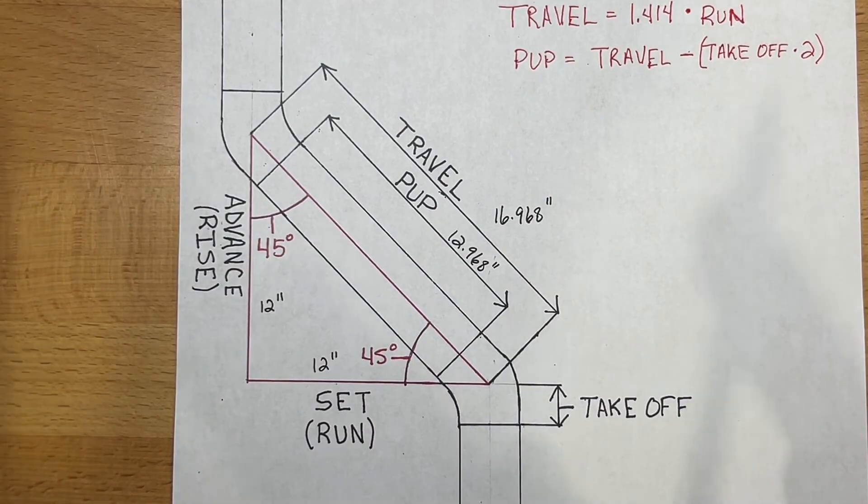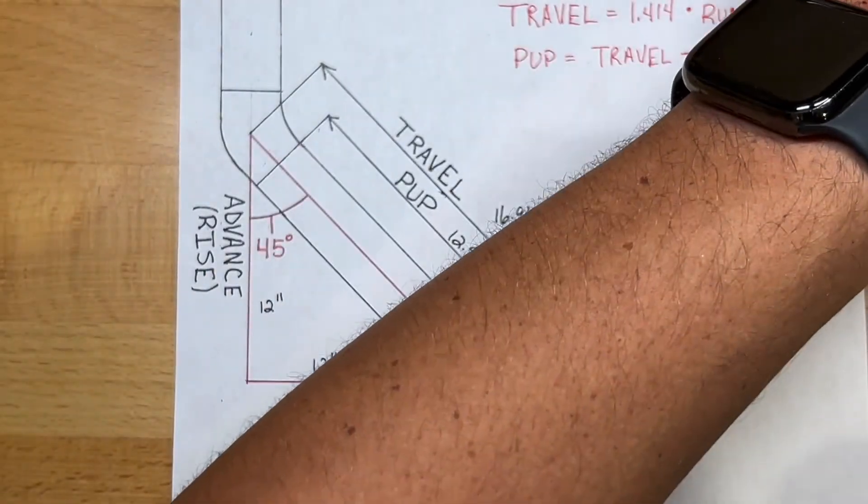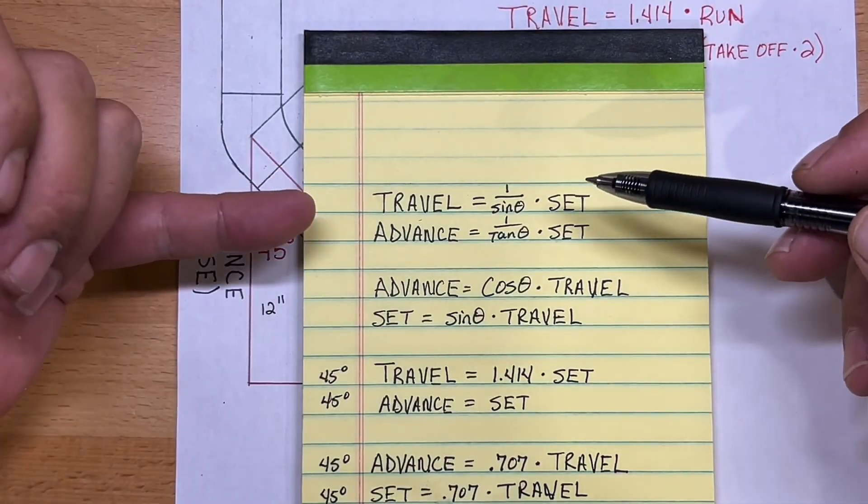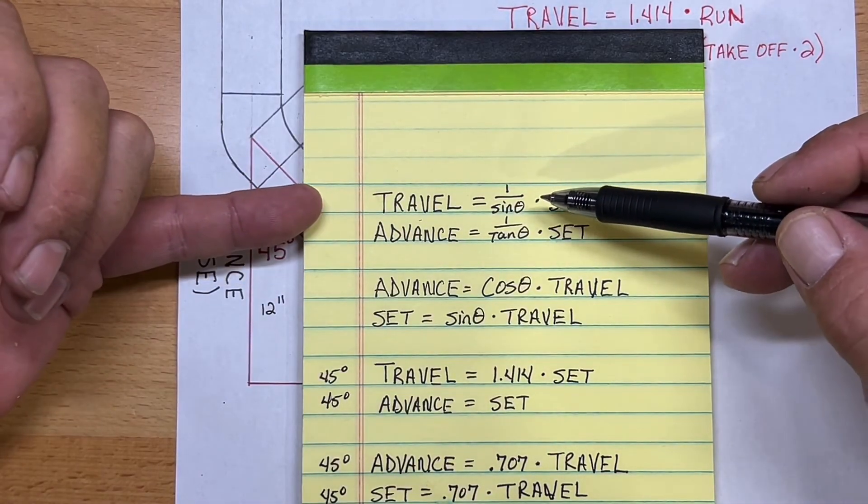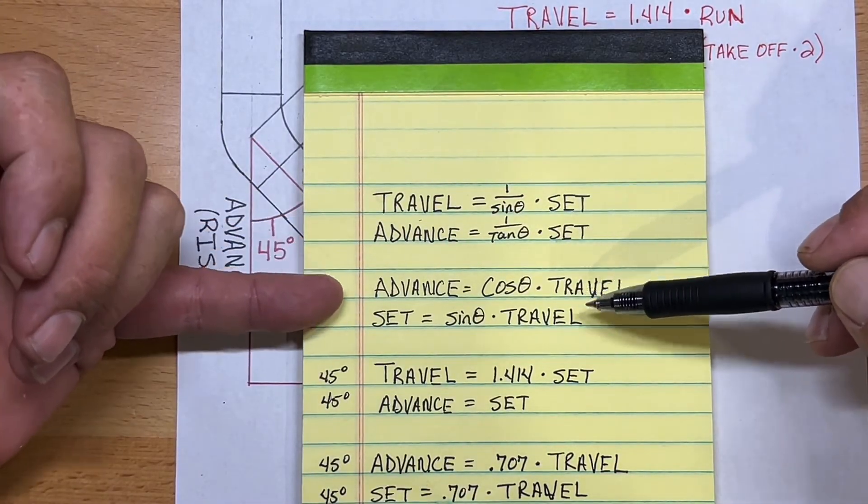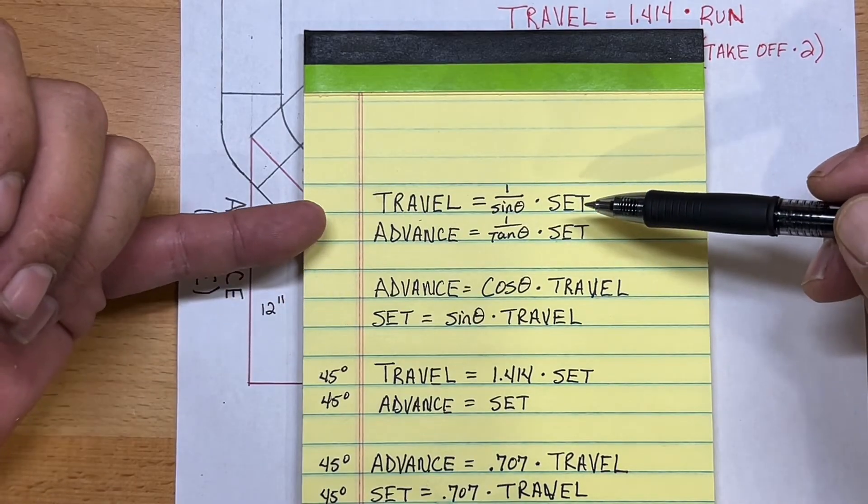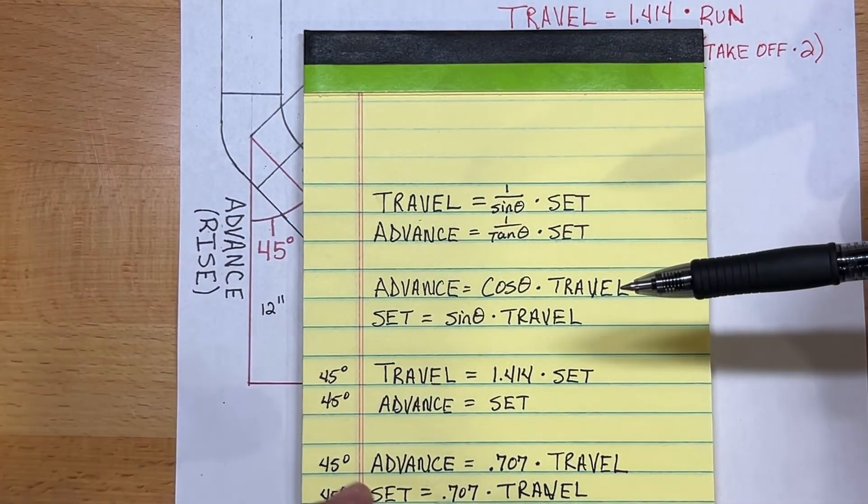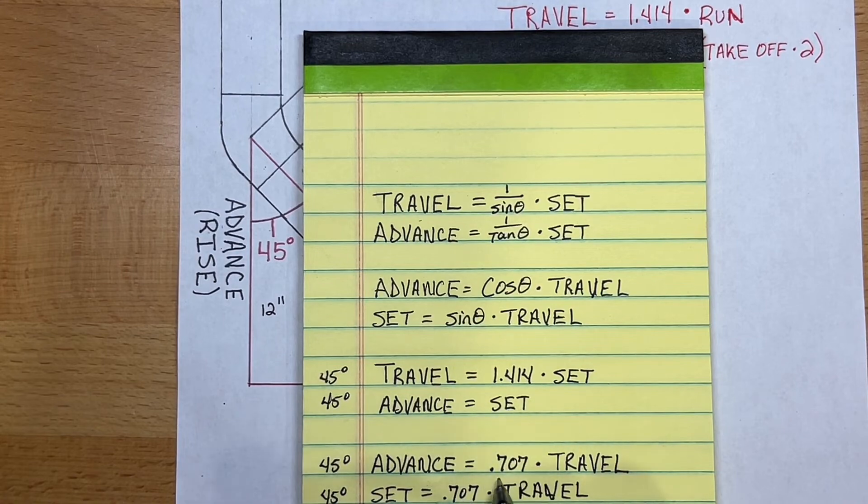So these are how you get those numbers. And again, these are the formulas for every degree. So whichever fitting you happen to be working with, if you use these formulas here, then you'll be able to find the constants, which in the case of 45 is 1.414 and 0.707. And that's how they derive those.